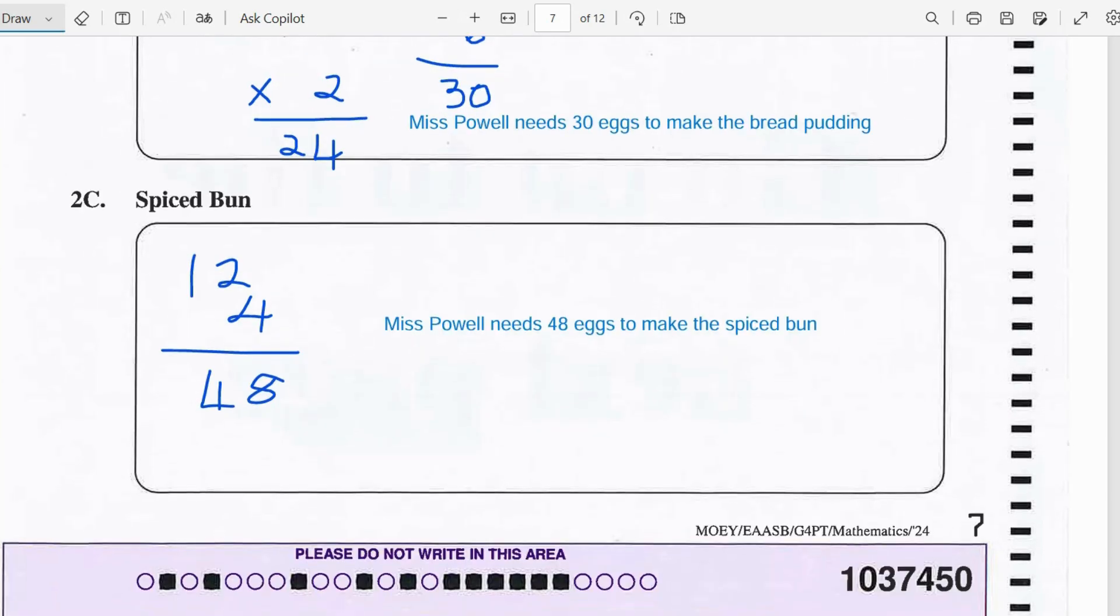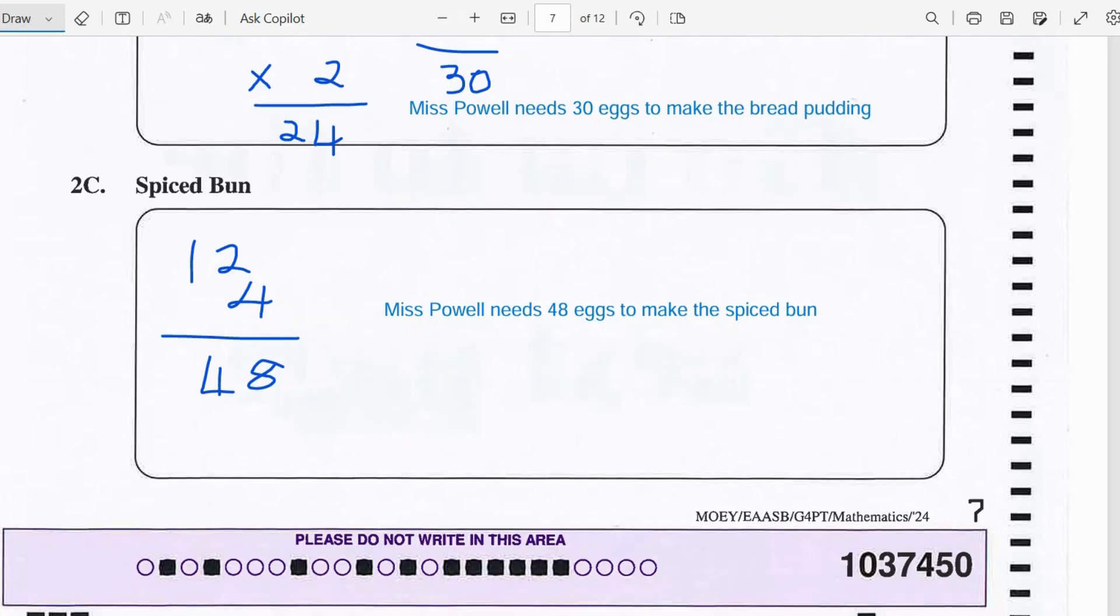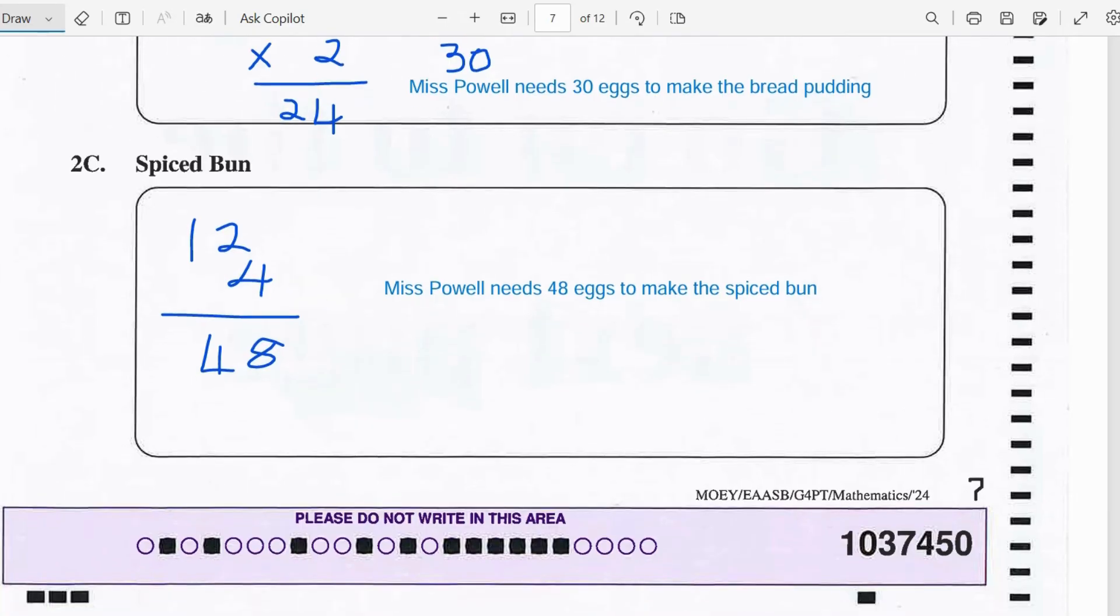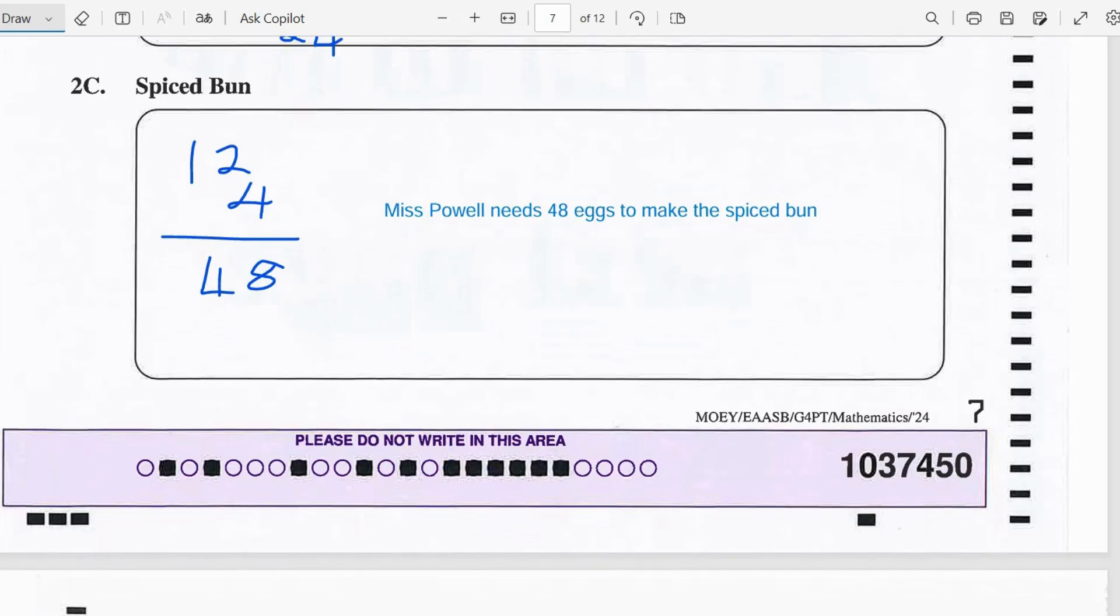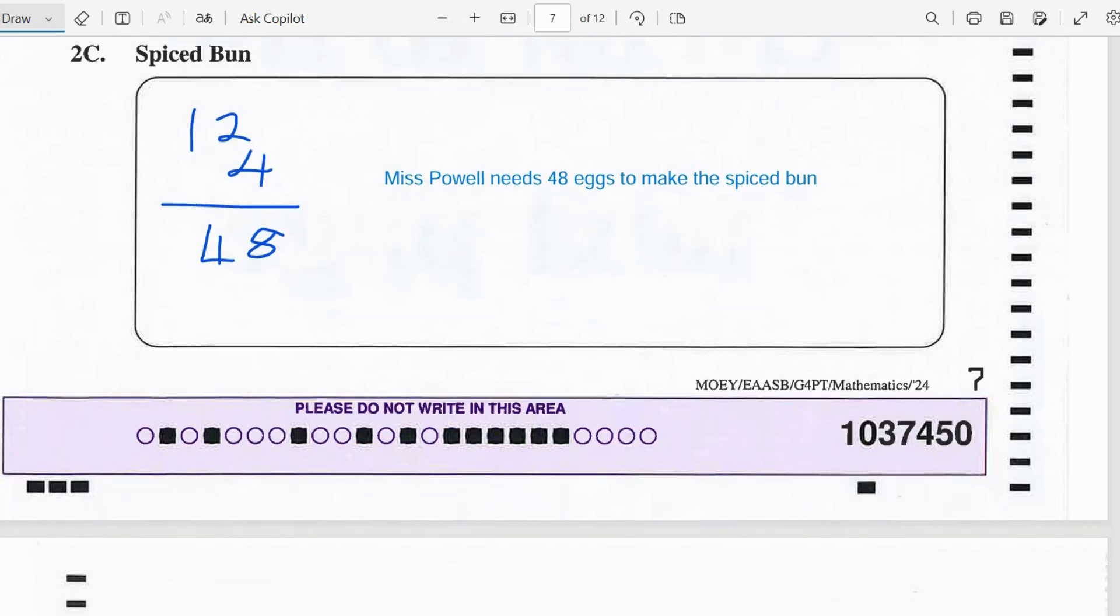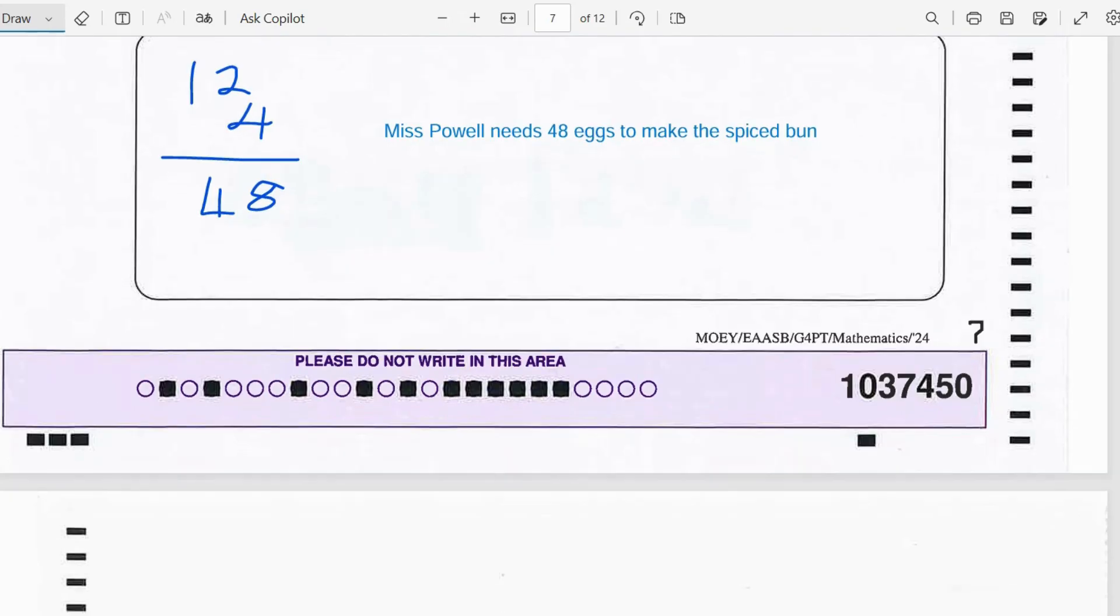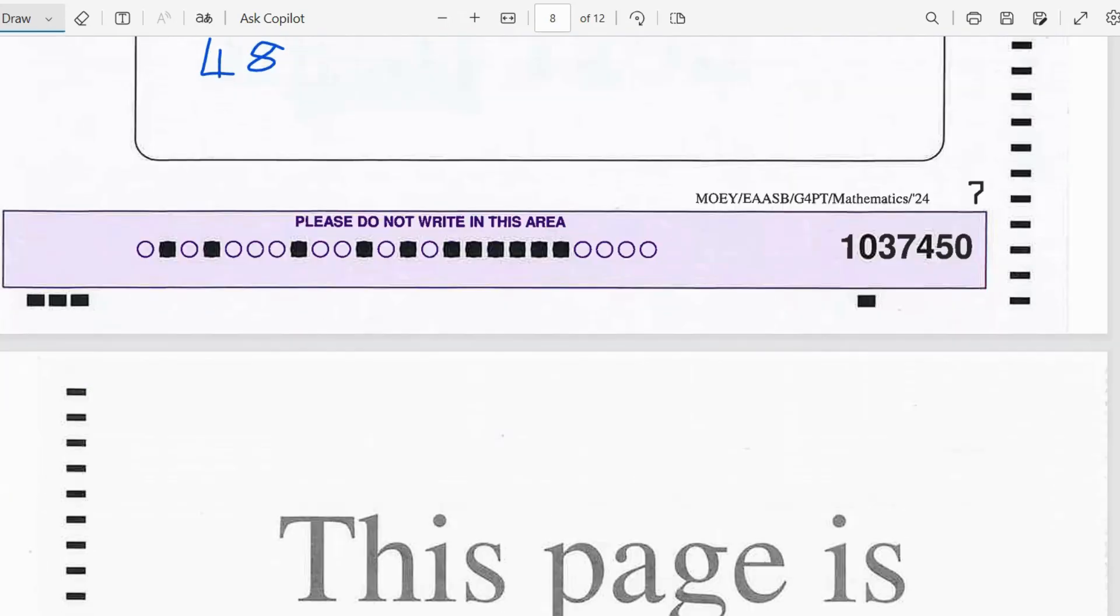Now finally for the spice bun she needs 4 dozen eggs and we can multiply 4 times 12 which is 48. So therefore Miss Powell needs 48 eggs to make the spiced bun.